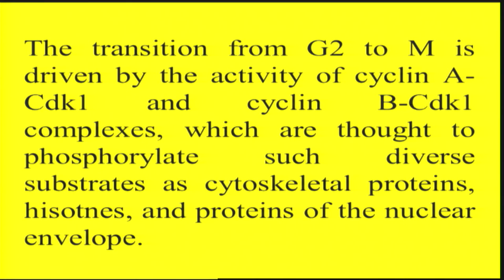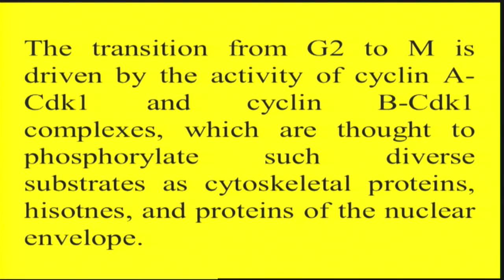The transition from G2 to M is driven by cyclin A and CDK1, and cyclin B and CDK1 complexes, which phosphorylate diverse substrates such as cytoskeletal proteins, histones, and proteins of the nuclear envelope. Once a cyclin and cyclin-dependent kinase are complexed, they activate many other genes, and when those genes are modulated, they bring about synthesis of proteins required for transition of the cell from one stage to the next.